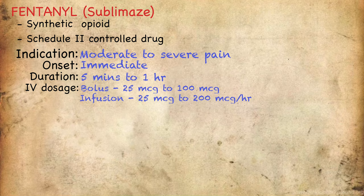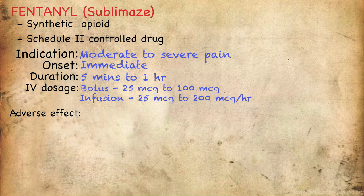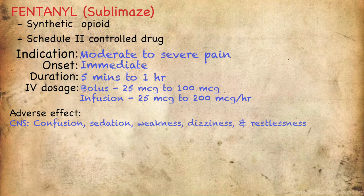Let's talk about some of the adverse effects of fentanyl. When we assess a patient, we use the head-to-toe systematic assessment — let's do the same when remembering the adverse effects of the drugs we administer. For the central nervous system, the adverse effects are confusion, sedation, weakness, dizziness, and restlessness. This is because fentanyl and other opioids depress the central nervous system.